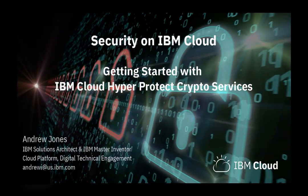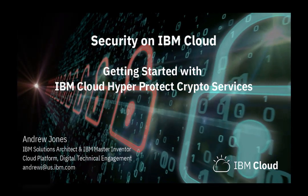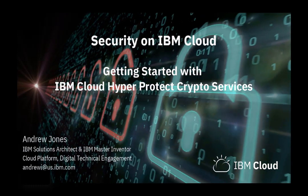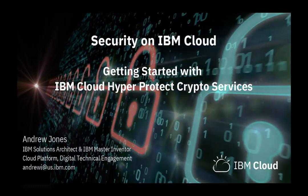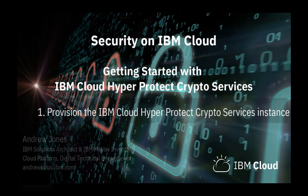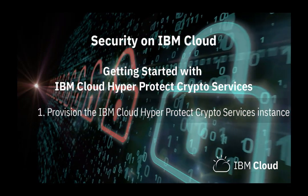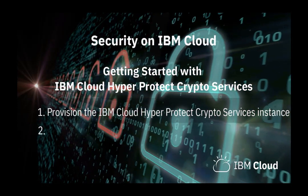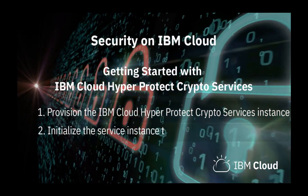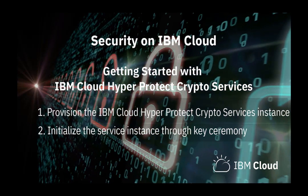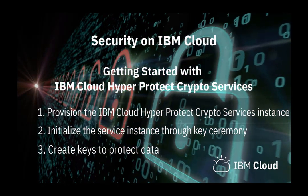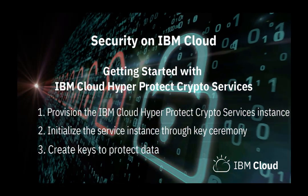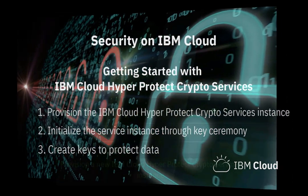Hi, Andrew Jones here from the IBM Digital Technical Engagement Team. In this video, I want to show you how to get started with IBM Cloud HyperProtect Crypto Services. We will begin by using the IBM Cloud portal to provision a new instance of the service. Next, we'll perform the initialization and key ceremony for the server instance. And finally, we'll return to the IBM Cloud portal and create a root key that you can use to protect your data. So, sit back and see how it's done.